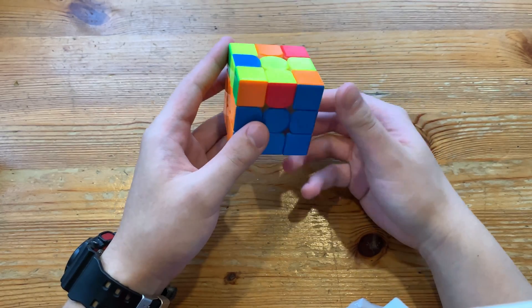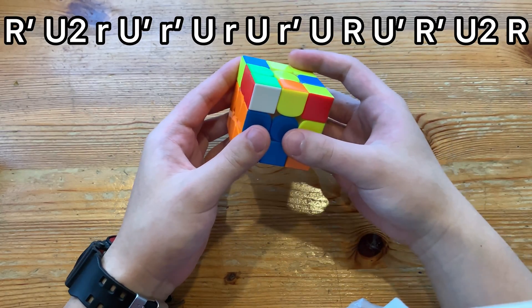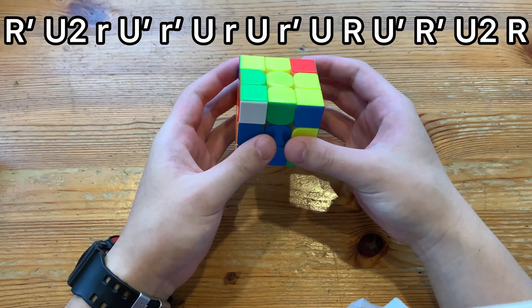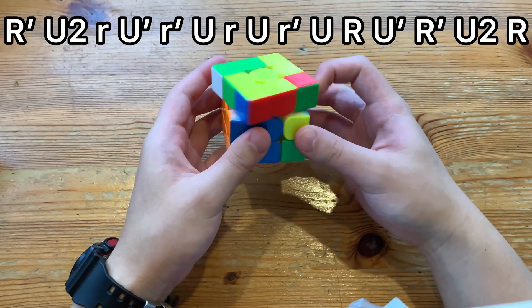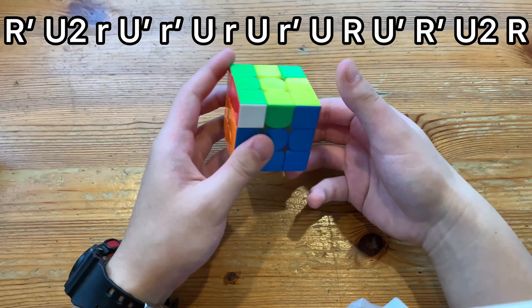And here's the alternative algorithm. You do R' U2 r U' r' U r U' r' U, and then here you do U R, and then insert the pair with R' U2 R.